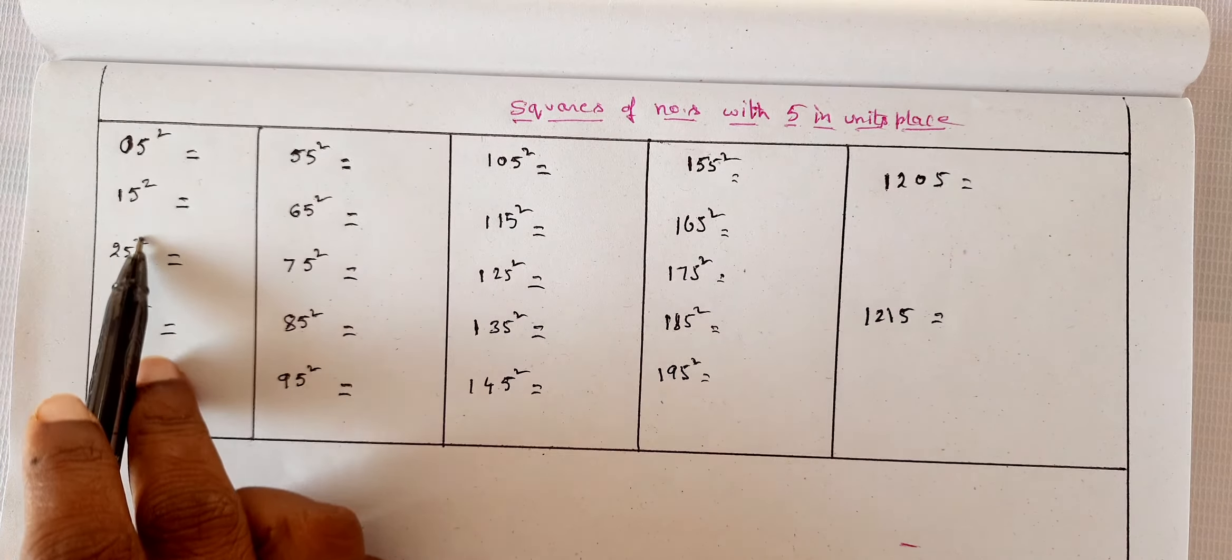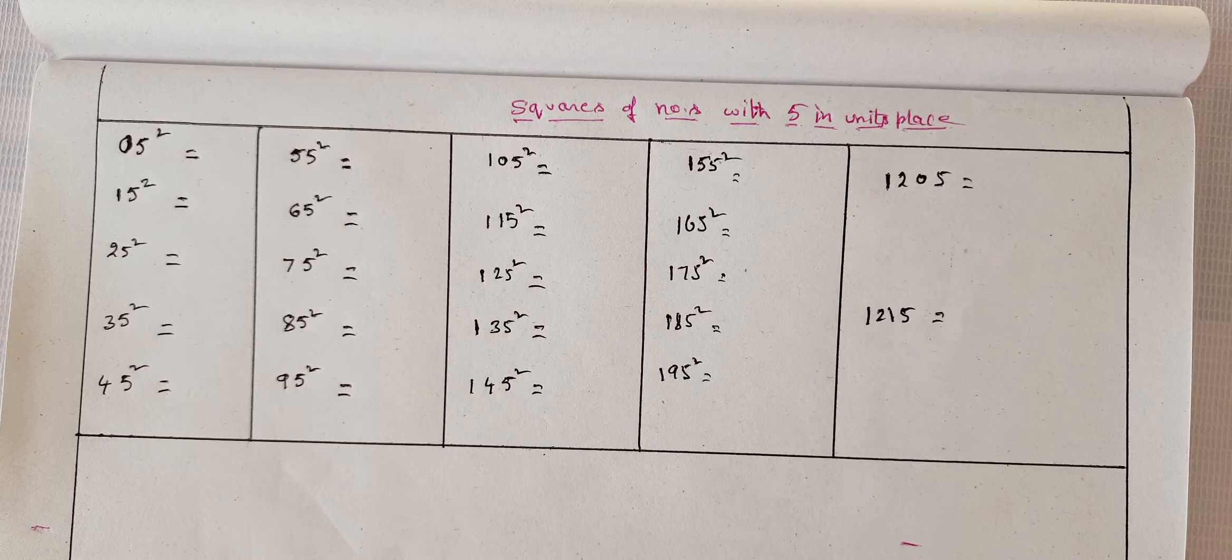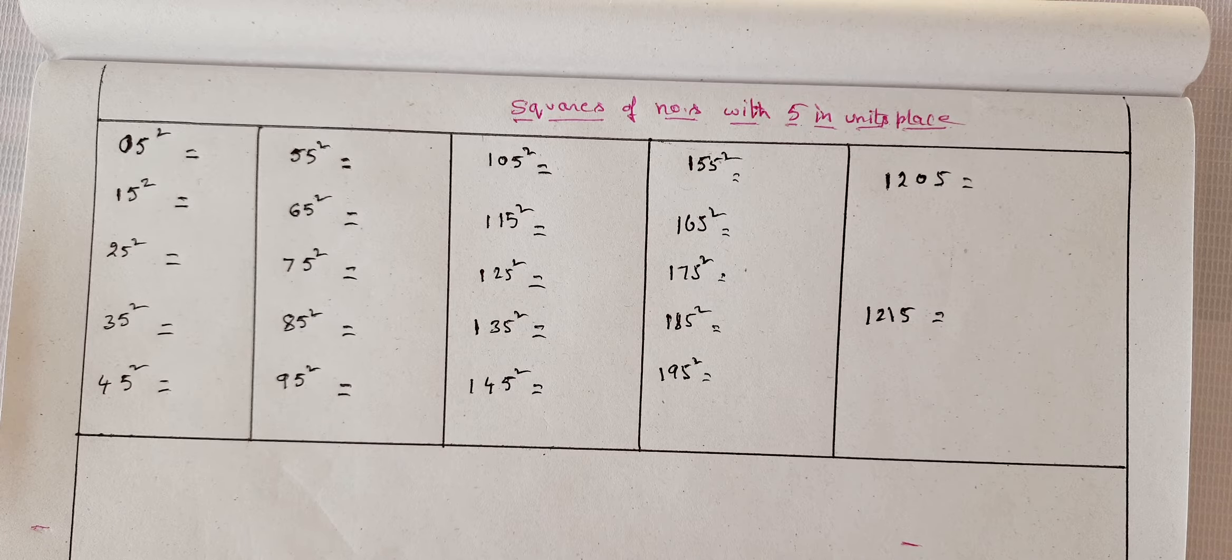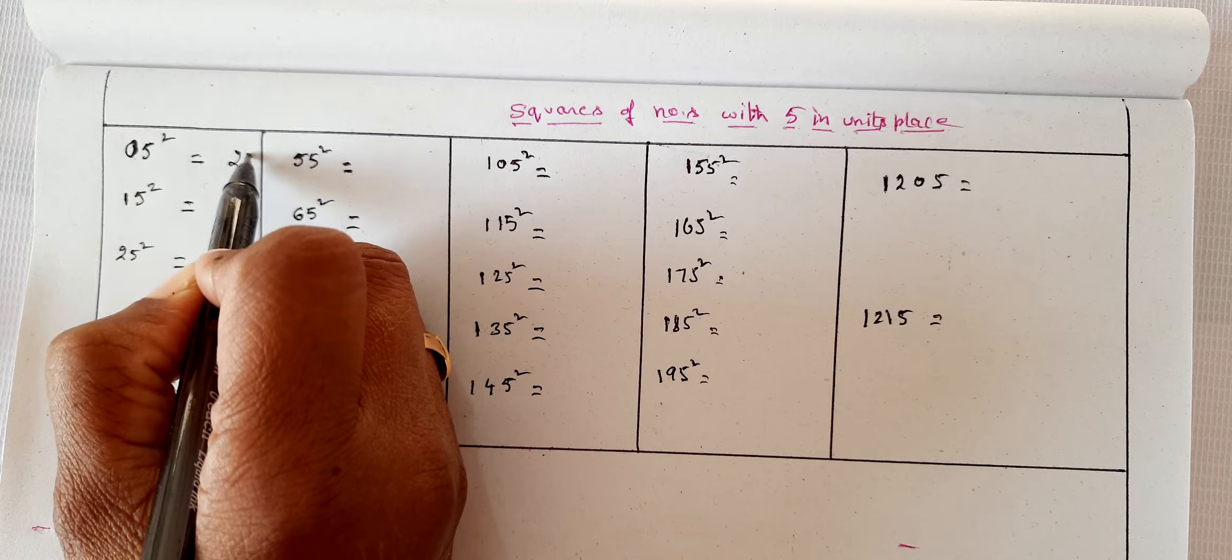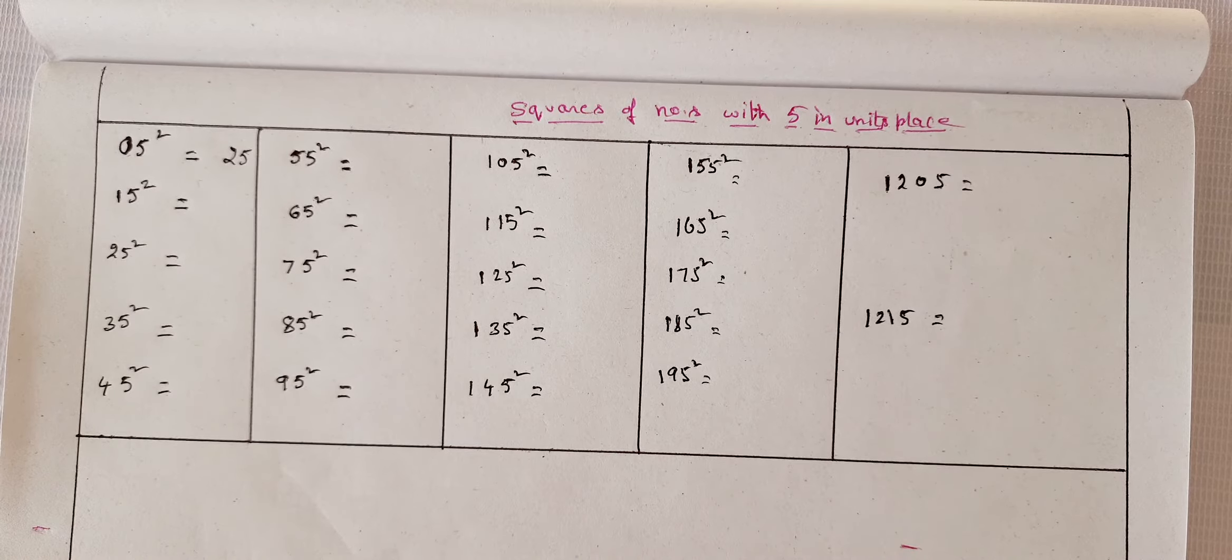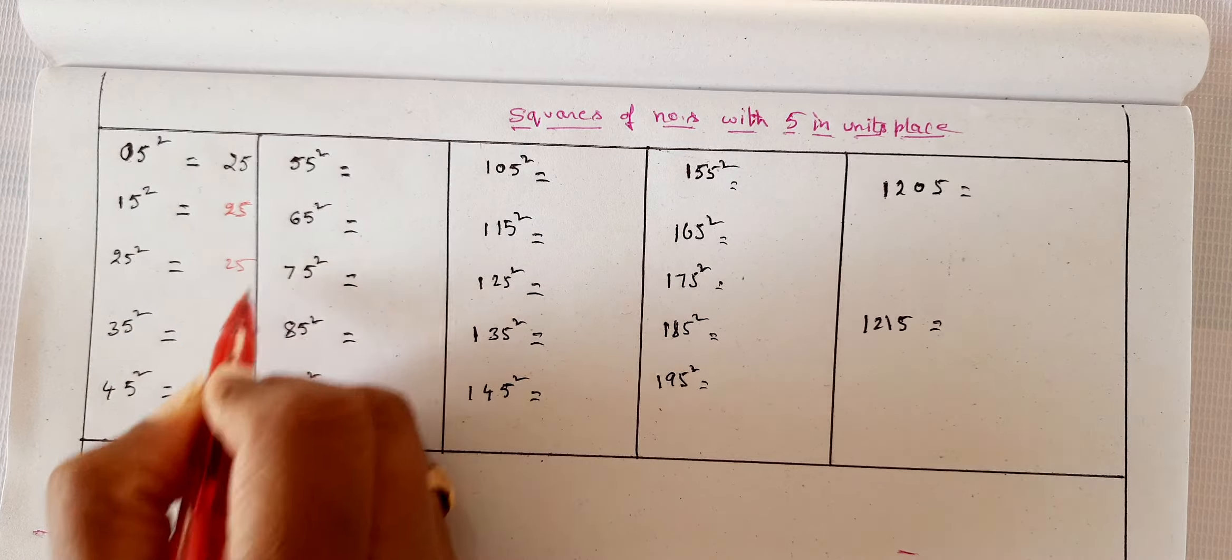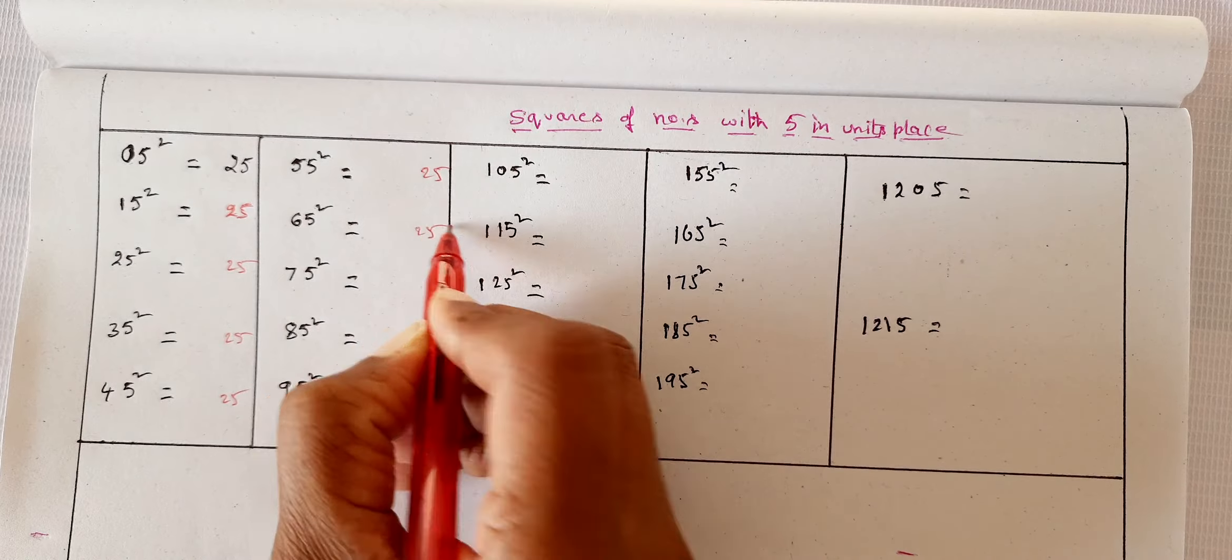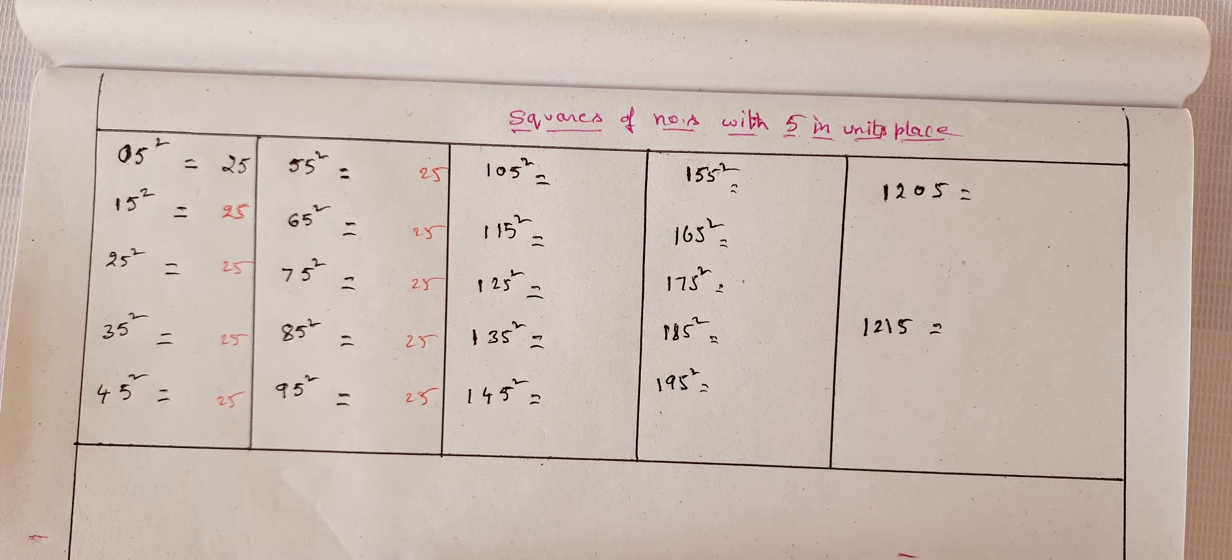Now let me start with the first trick, where the units place is five. This trick doesn't have any limitation—you can apply it to any number, any digit number. Here we go with certain examples. Five squared—the only simple thing you need to know is that five squared is 25, and the rest all will be of this trick. See, write down 25 everywhere: 25, 25, 25, 25, 25, 25, 25 like this.